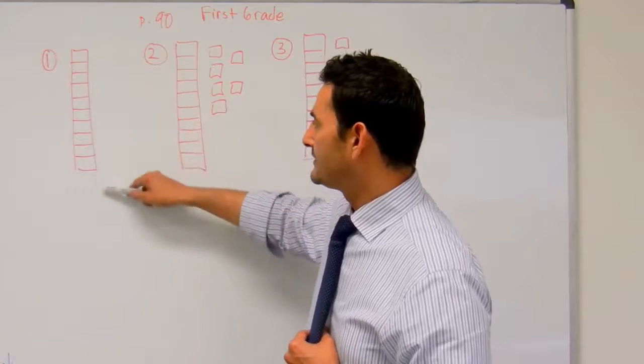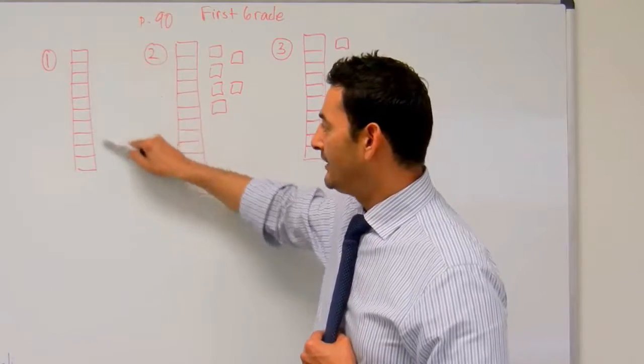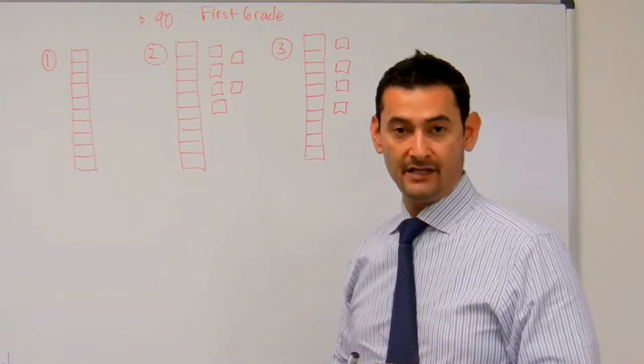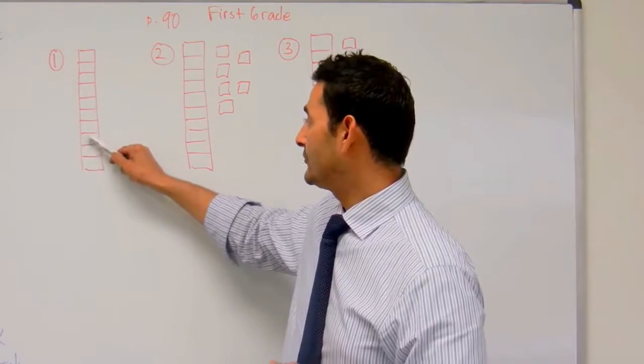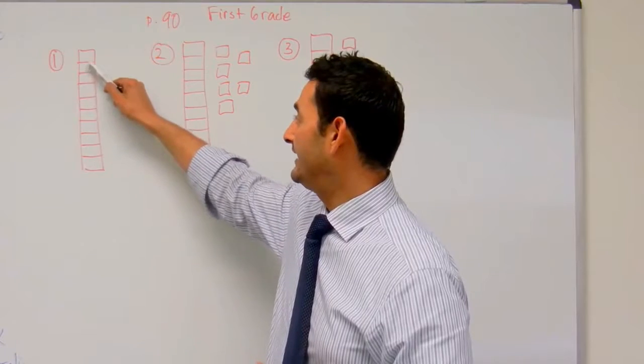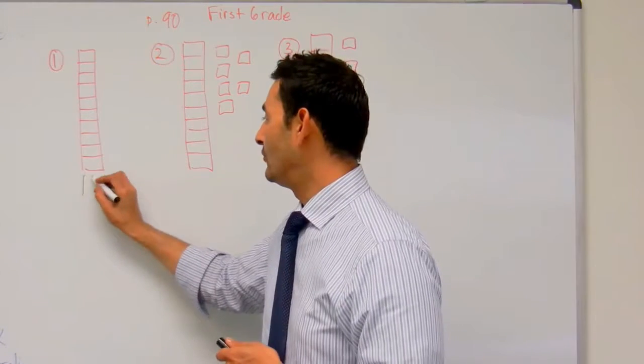So we know that this is a bundle of 10. So when you have a bundle of 10, how many ones do you think you have there? That's correct, 10. Let's see: 1, 2, 3, 4, 5, 6, 7, 8, 9, 10. So we have 10 ones, okay?